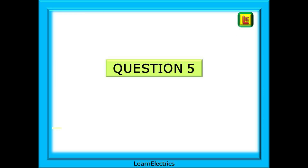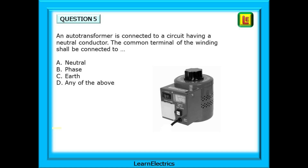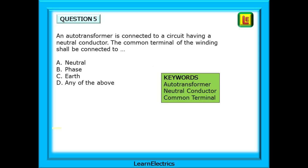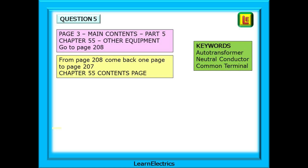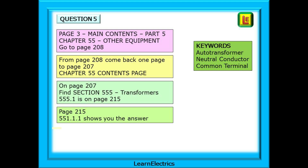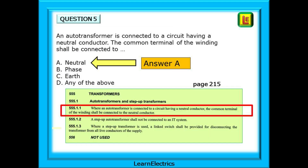Question 5, staying with other equipment: an auto transformer is connected to a circuit having a neutral conductor. The common terminal of the winding shall be connected to what? Go to page 3, find Part 5, then chapter 55, other equipment on page 208. Go back to page 207 for the chapter 55 contents page, and find section 555, 'Transformers.' Find 555.1 on page 215, then look at regulation 555.1.1 — this will show you the answer. We should choose answer A: the neutral.